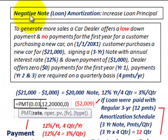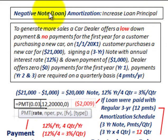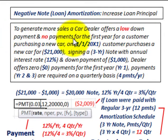What we're going to be going through here is a negative note or loan amortization. This is where we're going to have an increase in our loan principal. For example, to generate more sales, a car dealer offers a low down payment and no payments for the first year for a customer purchasing a new car.